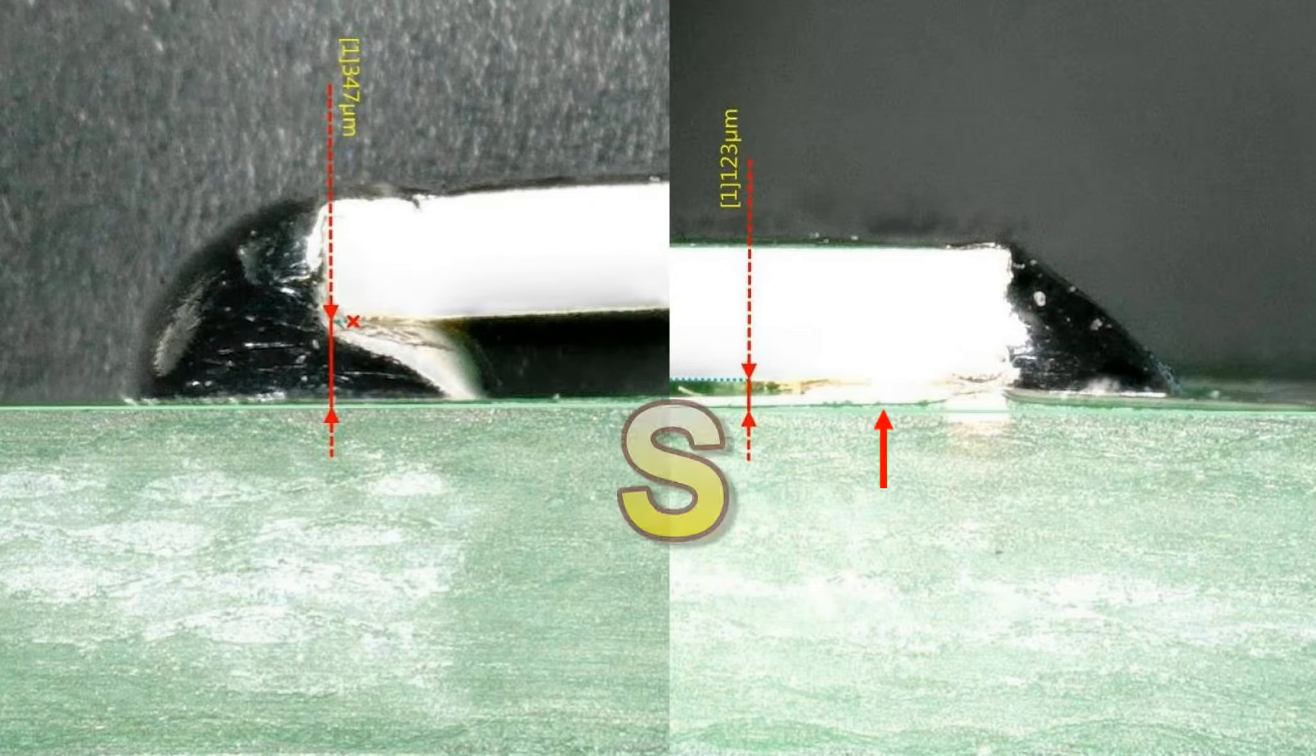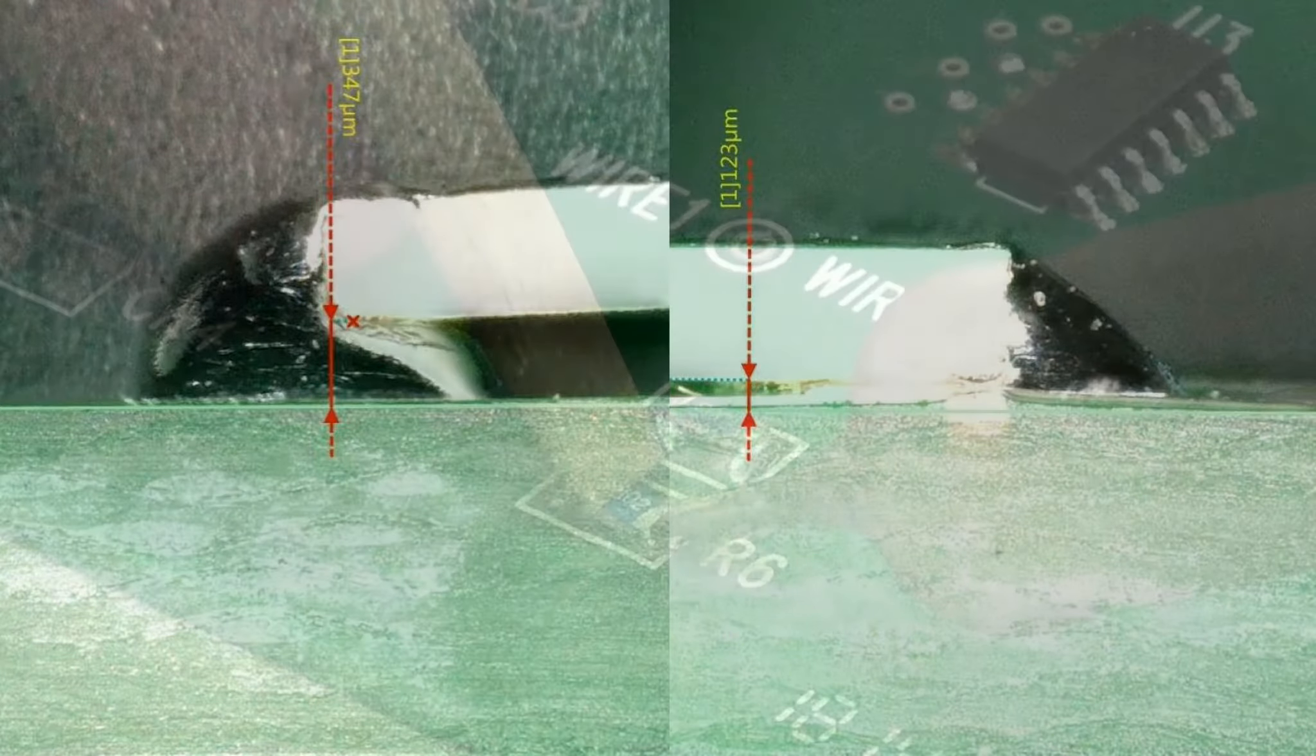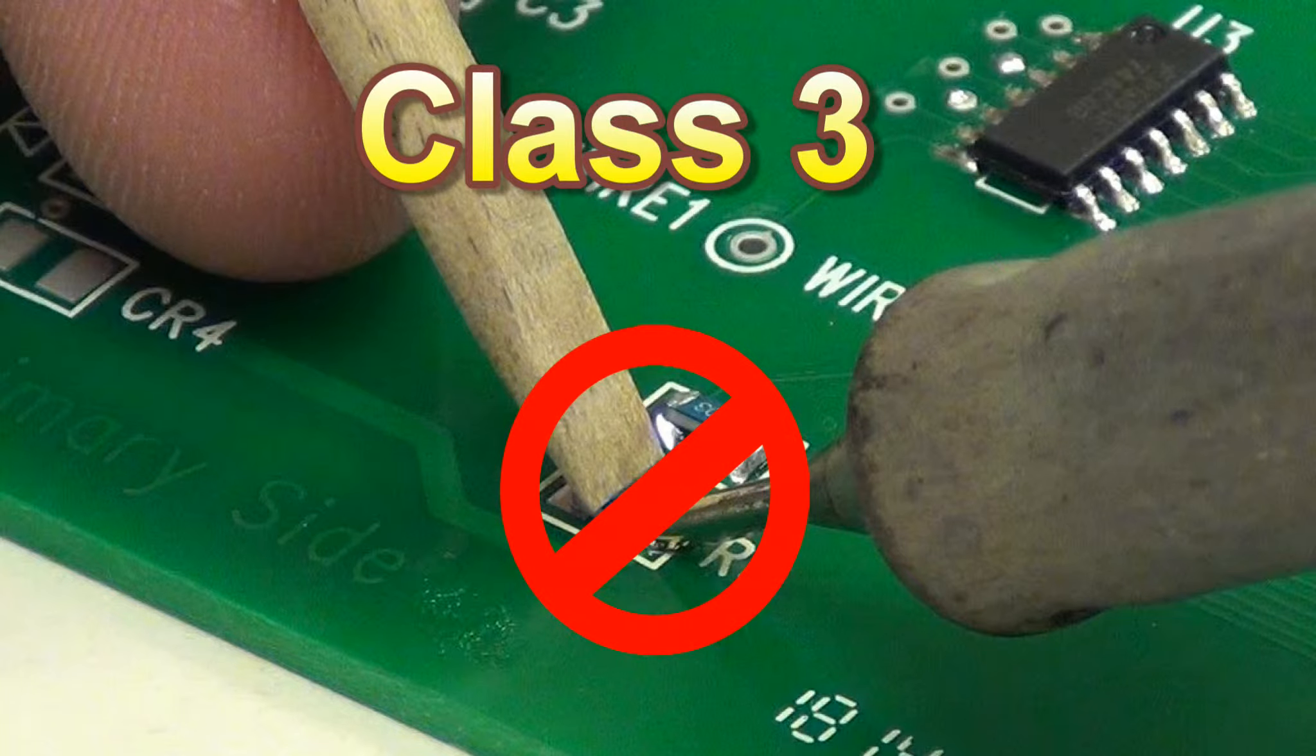than the soldering iron method, which should, in turn, provide greater long-term reliability. Keep in mind that the J-STANDARD 001 requirement concerning hold down only applies to class 3 product.